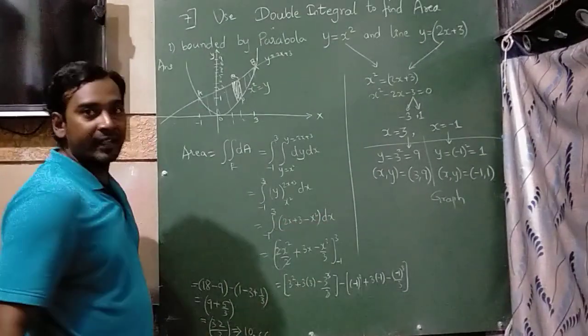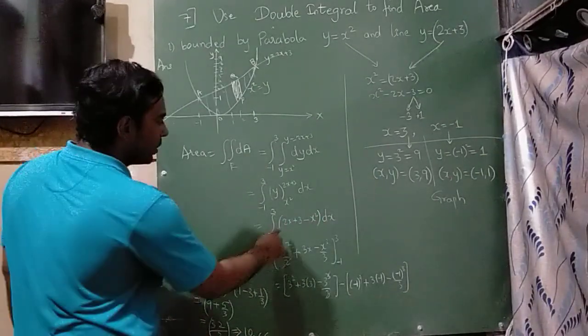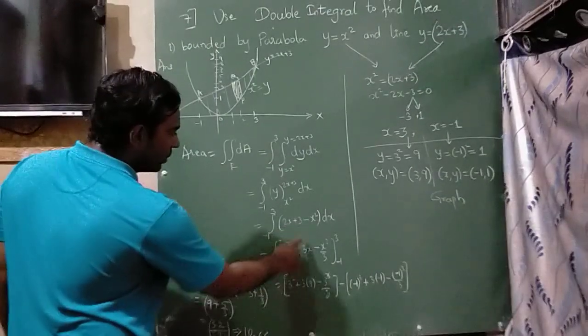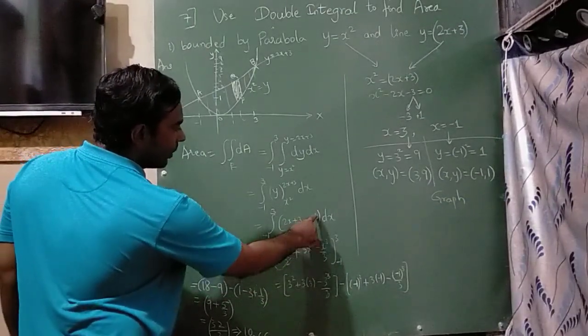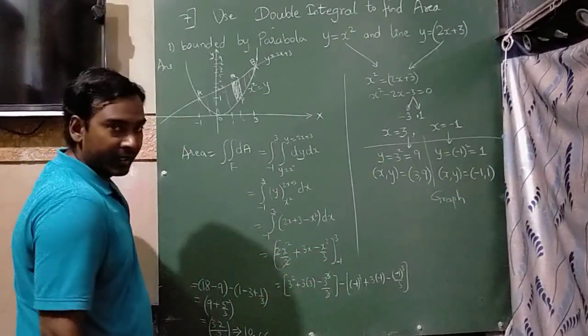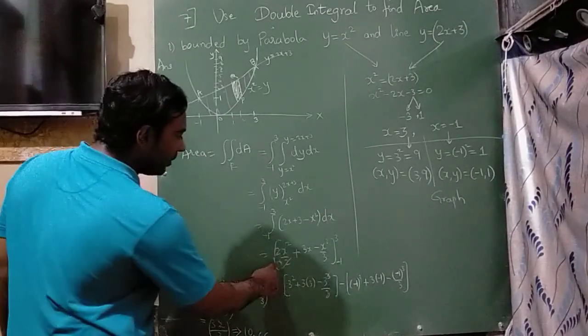This entire I am going to integrate with respect to x. So this will become x square by 2, this will become x and x square will become x cube by 3. This two and this two will get cancelled.